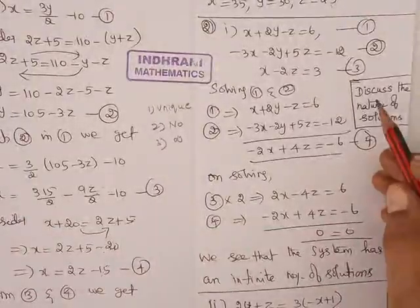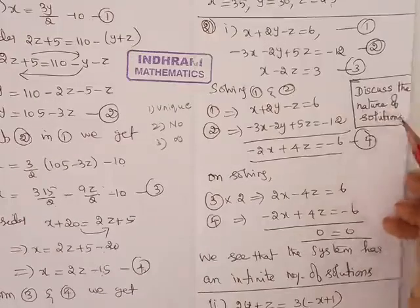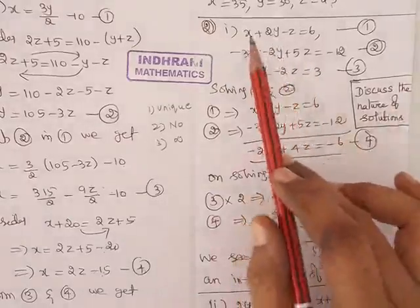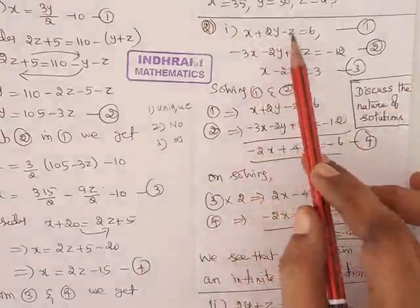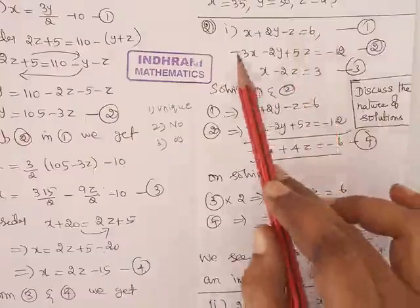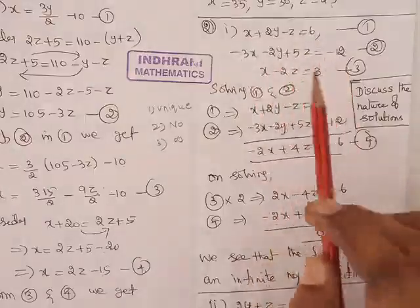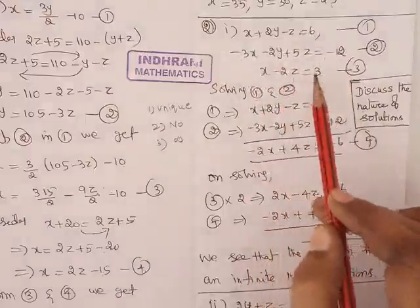Discuss the nature of solutions of the equations: x plus 2y minus z equal to 6, minus 3x minus 2y plus 5z equal to minus 12, x minus 2z equal to 3.